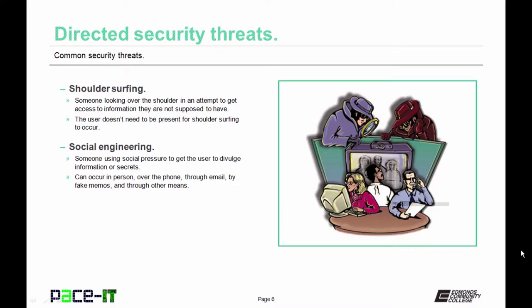The first directed threat we'll mention is shoulder surfing. That is where someone is looking over your shoulder in an attempt to gain access to information they're not supposed to have — watching you type in your password or PIN. As a side note, the user doesn't need to be present for shoulder surfing to occur; you can simply leave your PC running without a screensaver.